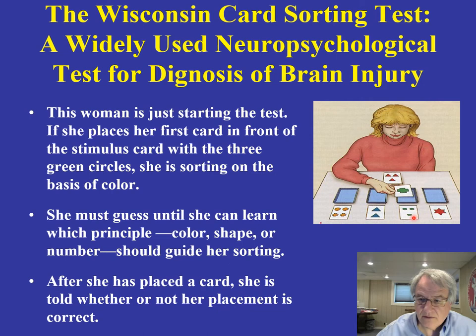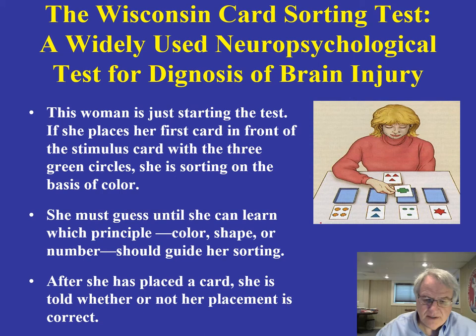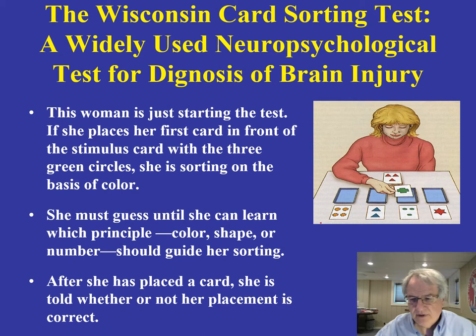She would keep sorting again on the basis of color — this card right here would match up with this particular target card. The examiner will do this for a period of time on the basis of color, but then will shift to shape. The examiner would say 'correct' or 'incorrect.' This is going to be constantly shifting — for a while on the basis of color, for a while on shape, for a while on number, and they'll keep shifting that around.